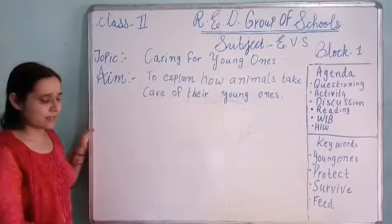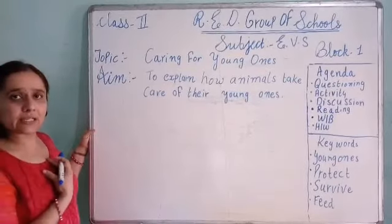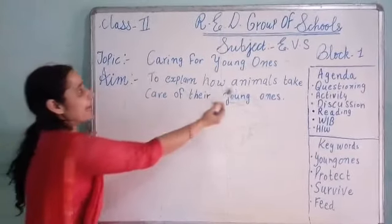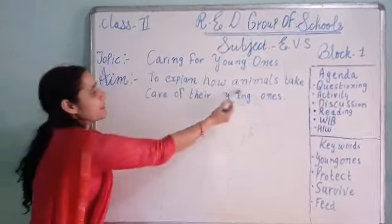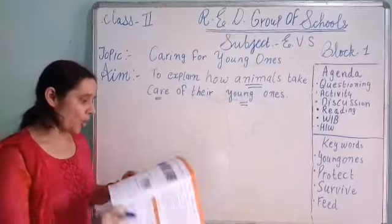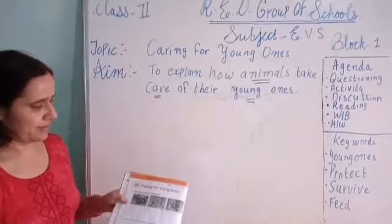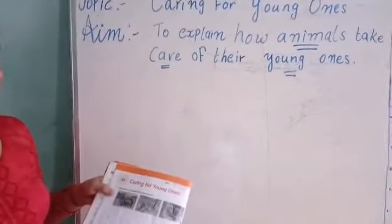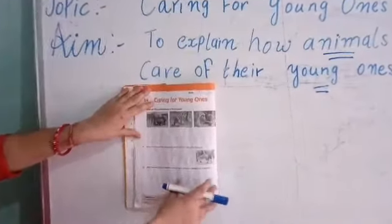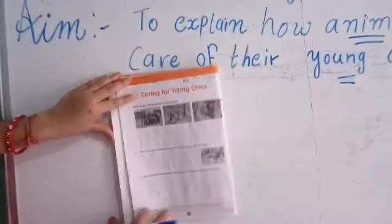Now, next activity time. Before activity time, I am telling you again what we will do today: to explain how animals take care of their young ones. Jaisi parents hamari care karte hain, same animals bhi apne baby ki care karte hain. Open your workbook and open page number 12, for young ones.